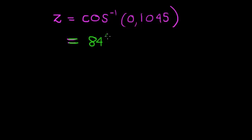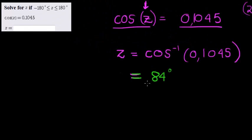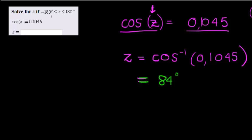Now does my 84 degrees fall within the negative 180 and 180? Yes, indeed it does, which means that this is the value for z. There might even be another value for z.